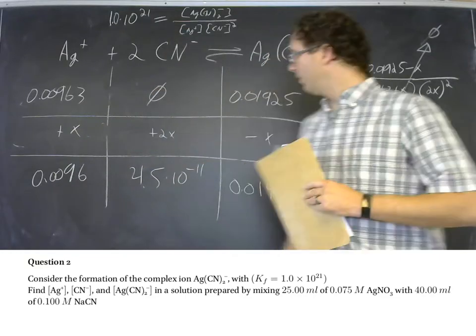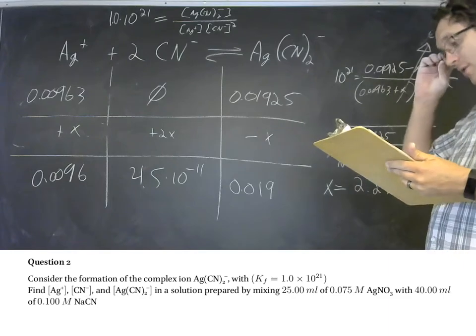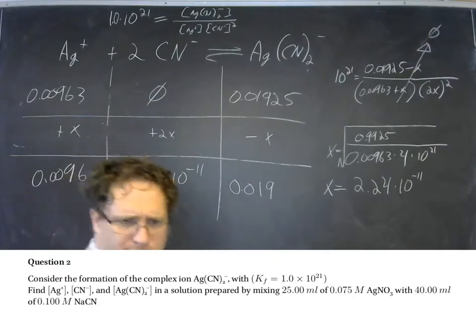And that is indeed small. So this is going to be 0.019 because we only get 2 sig figs and this is going to be 4.5 times 10 to the negative 11th and here we'll have 0.0096. There we go. Those are our three equilibrium concentrations for the silver cyanide system. All right, we're nearly done.